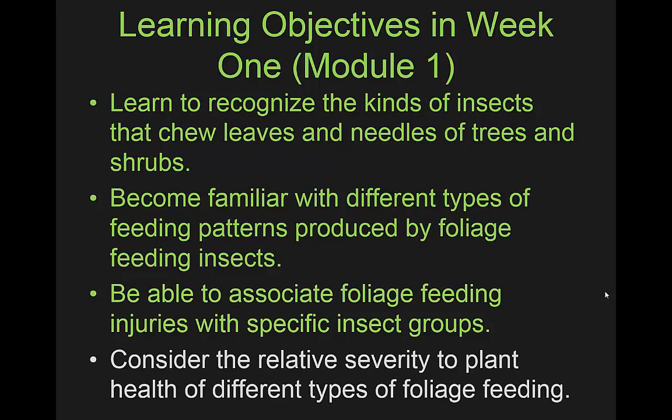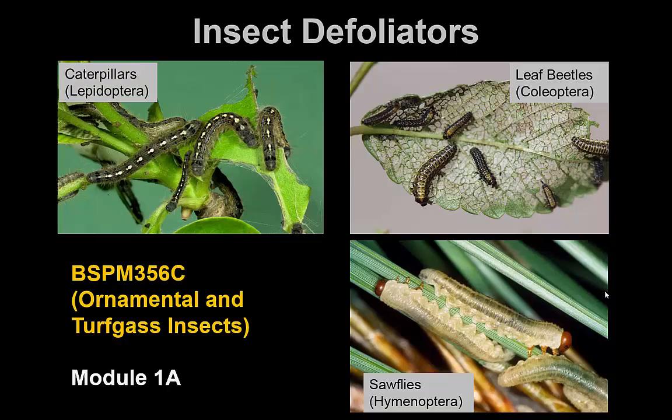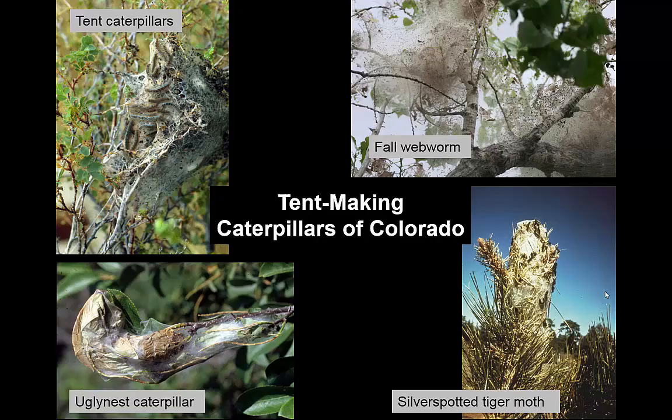We'll also consider the relative severity to the plant of these kinds of injuries. Different kinds of insects feed at different times of year on different types of plants, and it's important to ask just how important this is to the health of a plant. Defoliators generally involve members of three different insect orders: various caterpillars in the order Lepidoptera - things that will turn into a moth or butterfly - one group of beetles in particular, the leaf beetles, and then the odd group of wasps, the sawflies that feed on foliage.